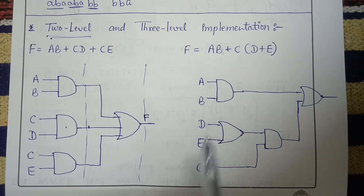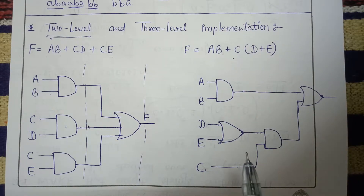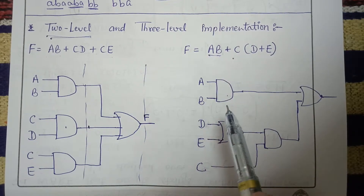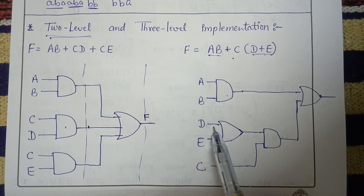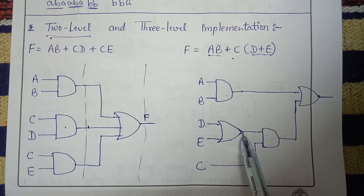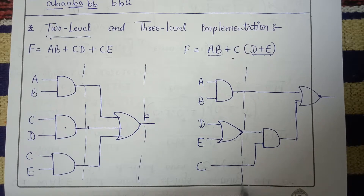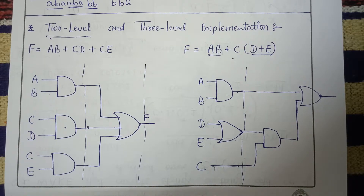Now if I write this function as ab + c(d+e), I will implement it this way: a AND b is one operation, and d OR e is another operation. These two operations are performed in the first level. Note that c has no operation performed on it in the first level.